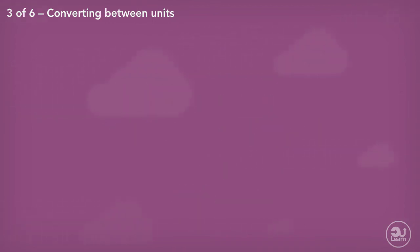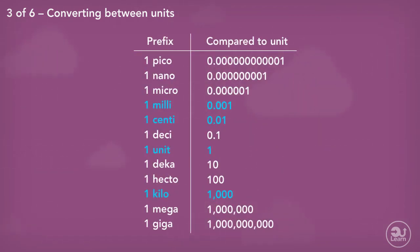There are other prefixes that are used in the metric system such as deci, micro, nano, pico, deca, hecto, mega, giga, and so on. There's quite a few of them. However, depending on where you are and what you're studying, all are not required to be known.